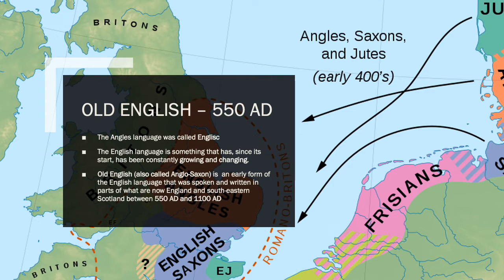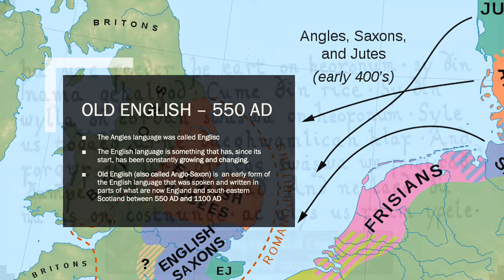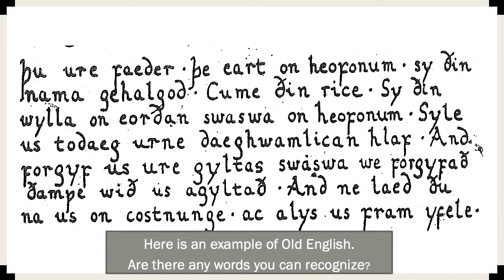We're going to have a look at some Old English — the very earliest form of the language we recognise as English. We're going to look at a piece of text that you might not recognise initially, but you might recognise it shortly. Your job now is to have a look through carefully, see if you can spot any words that are familiar to you, and then on the form write down any of those words that you can recognise.